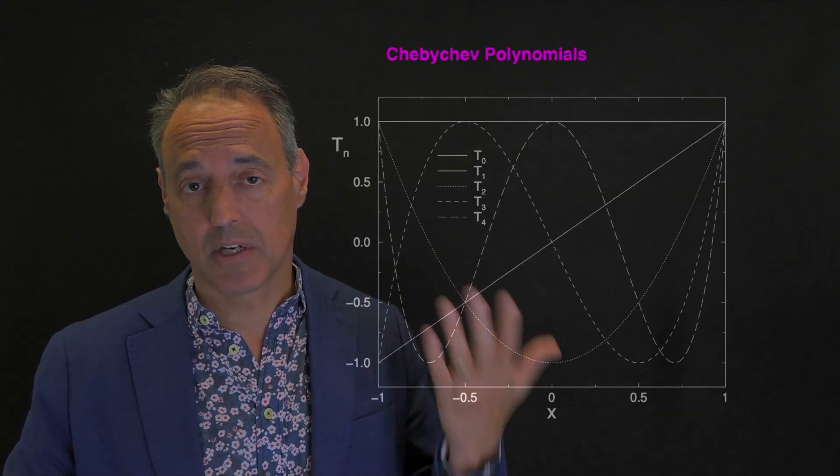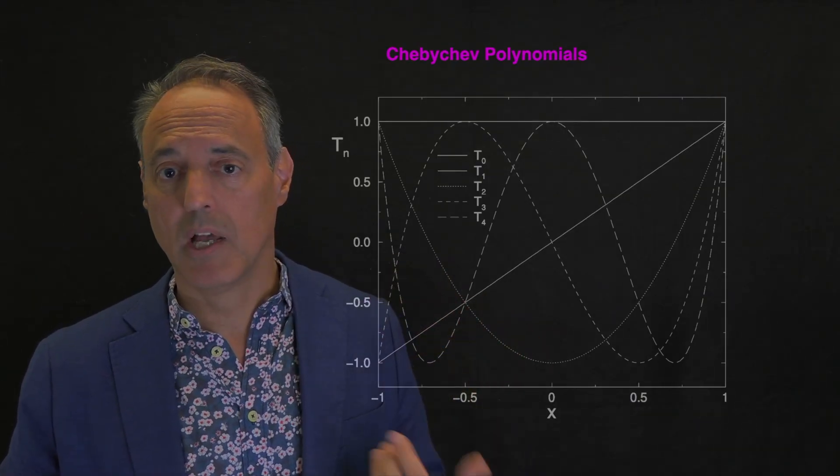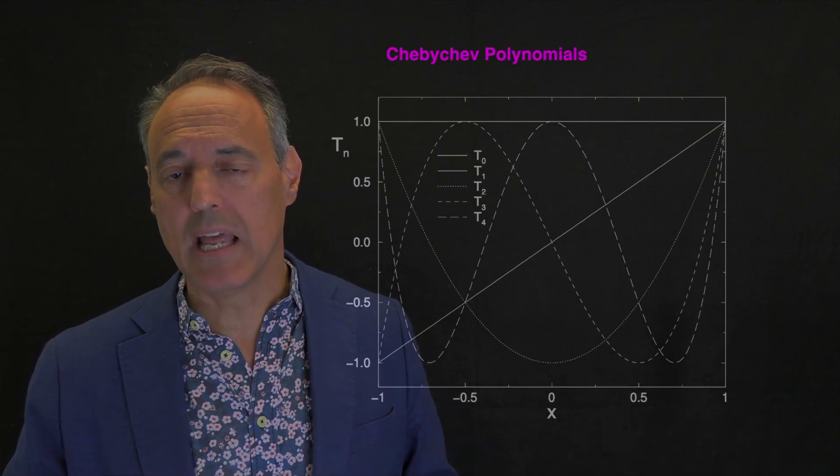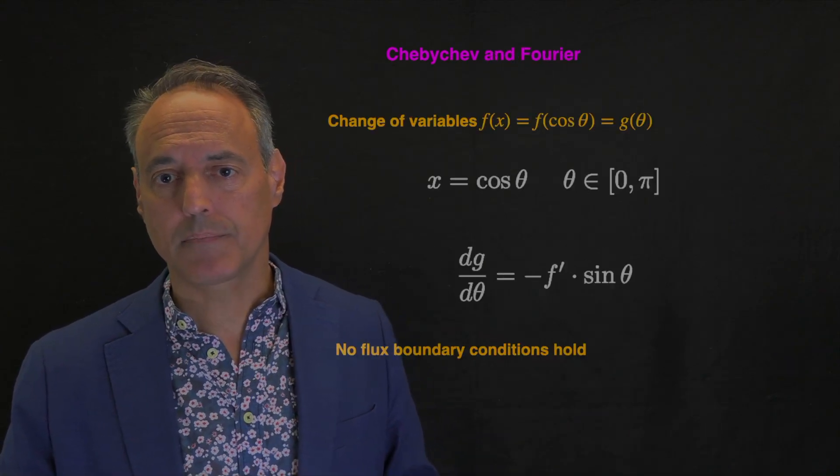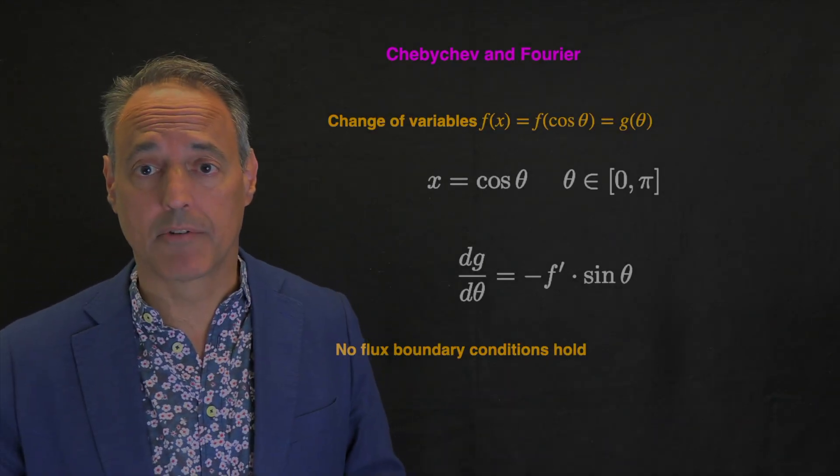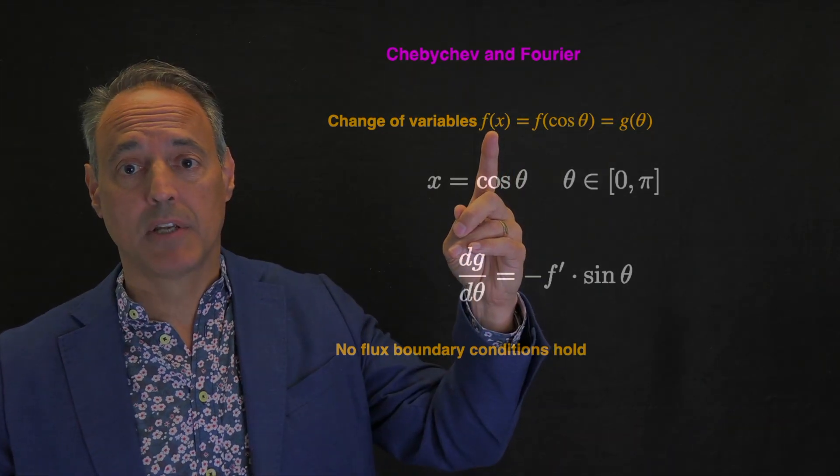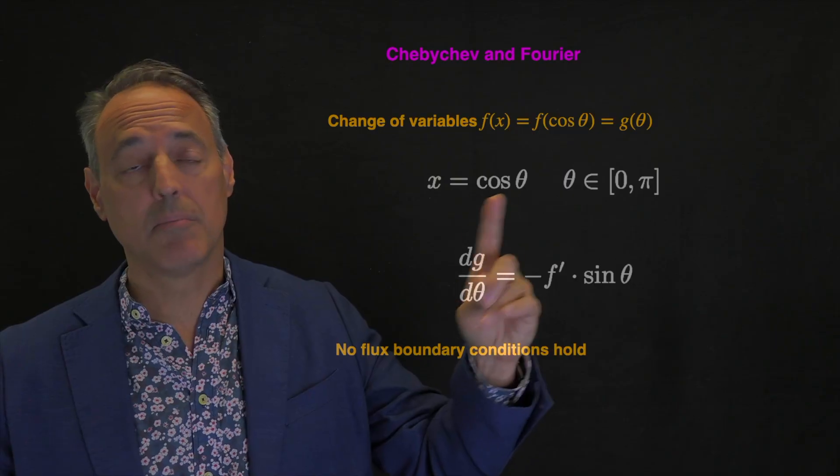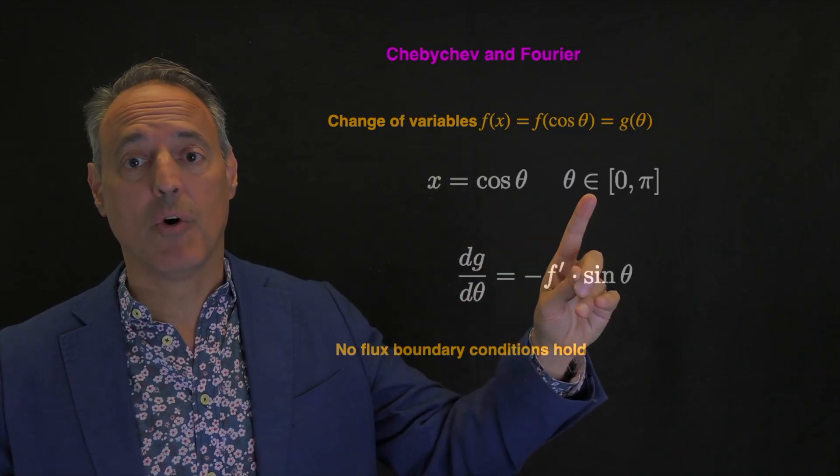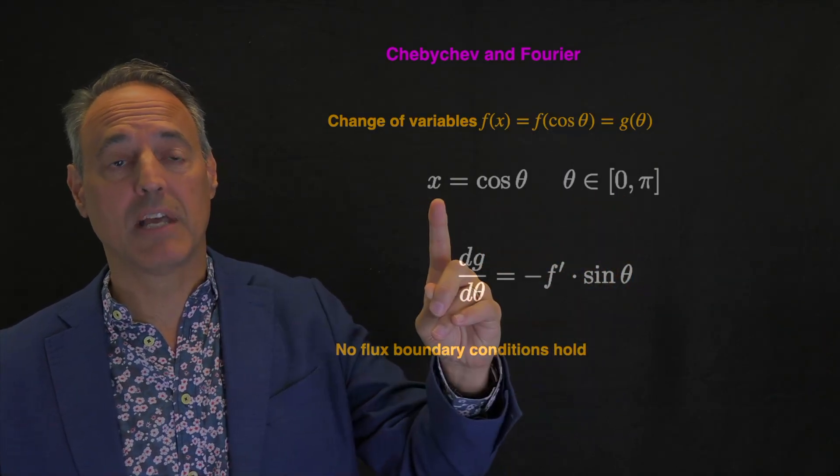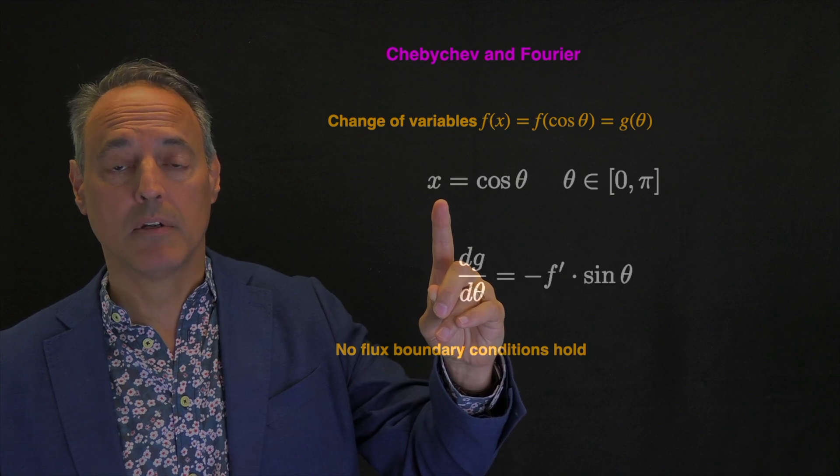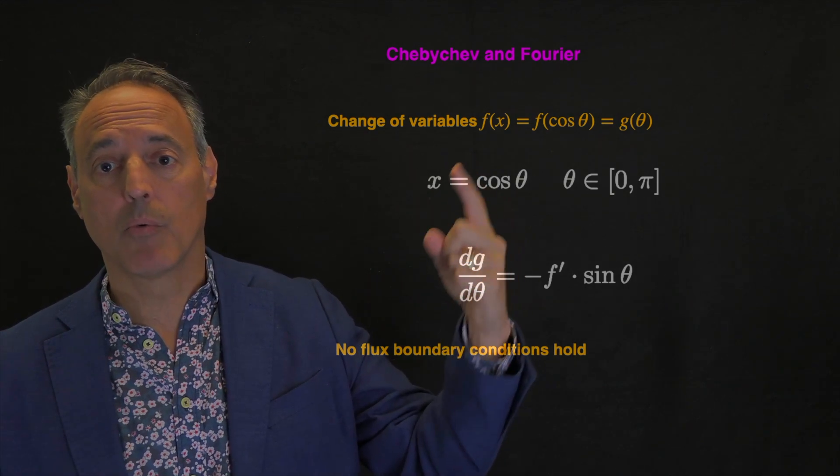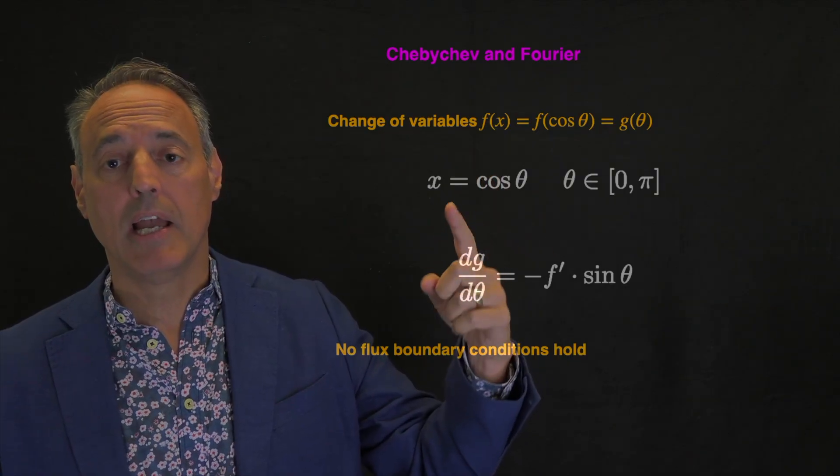Because it has a connection to the cosine transform, I can make this transformation in n log n time. Here's the change of variables. If f of x and x equals cosine theta, this is the transformation. Theta on domain zero to pi means x goes from negative one to one. I take my function f of x, but now it's a function of cosine theta.